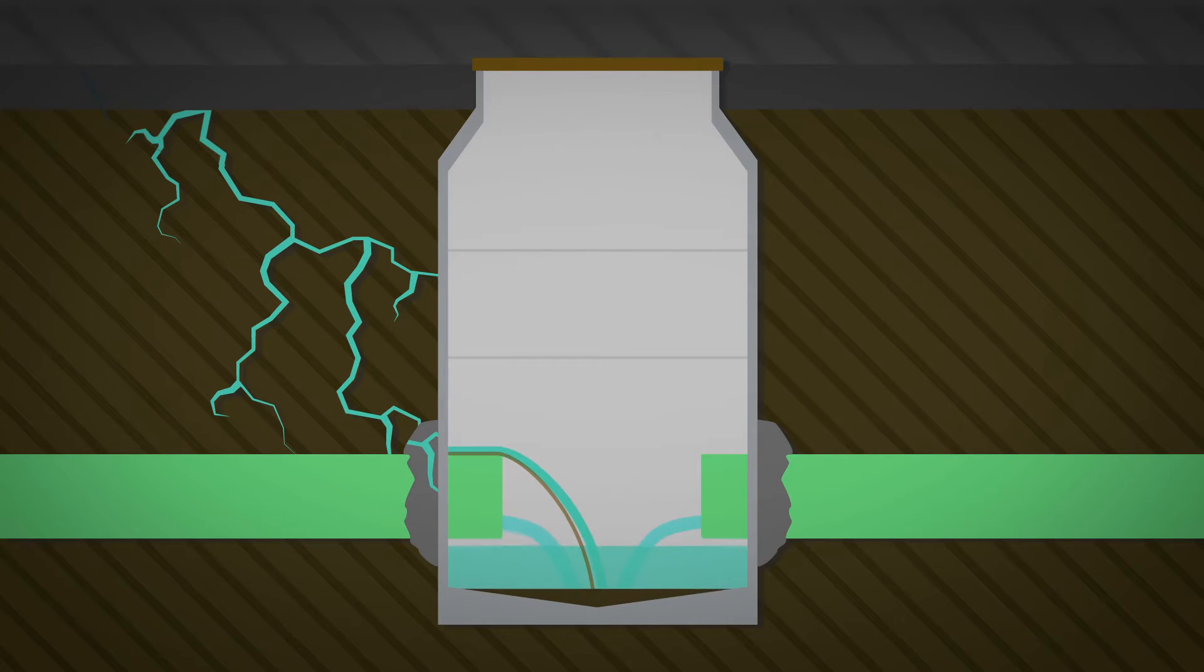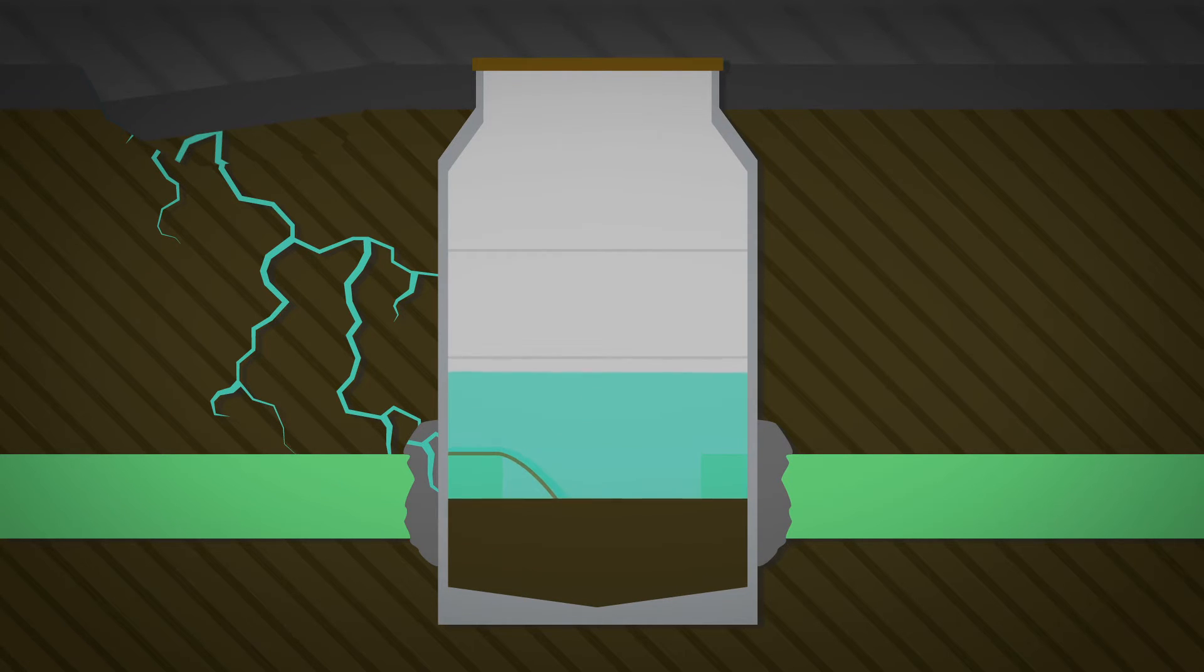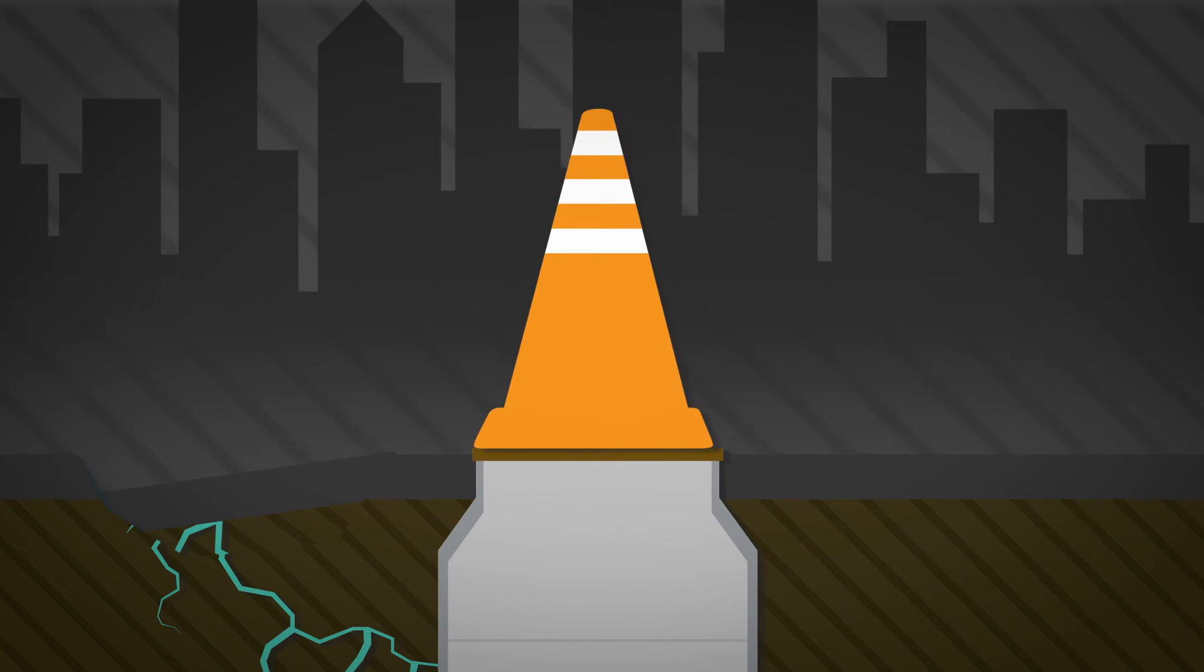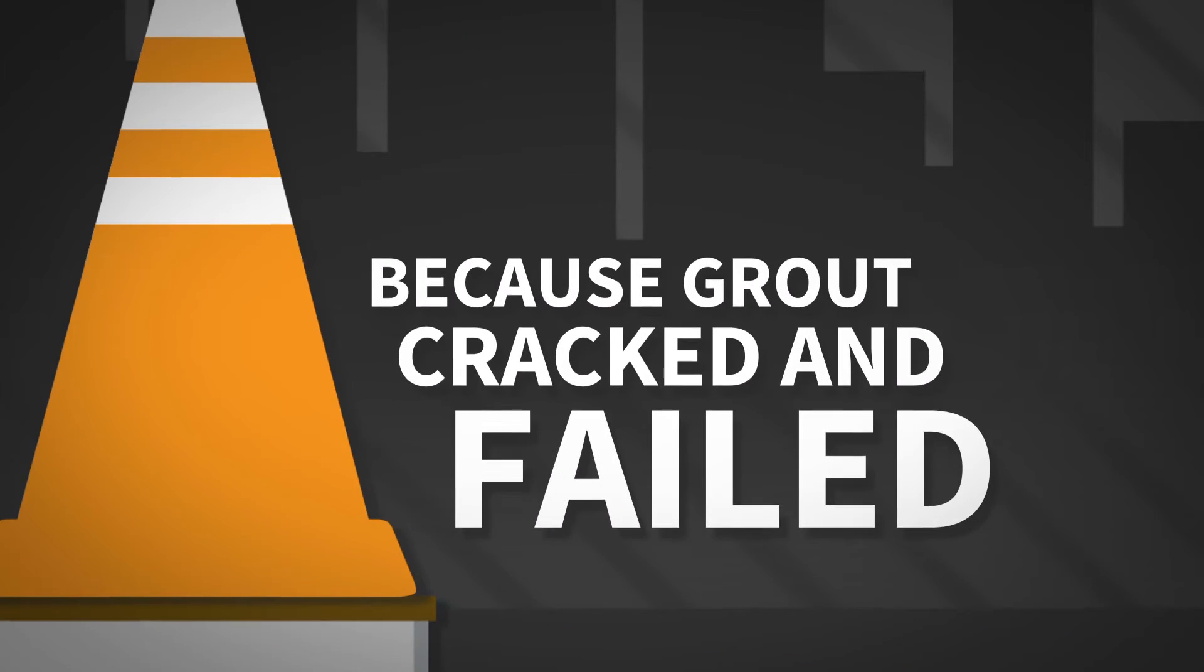More and more soil washes away under the road and down into the collection system. The road collapses, systems back up, an entire city block could come to a halt, all because grout cracked and failed.